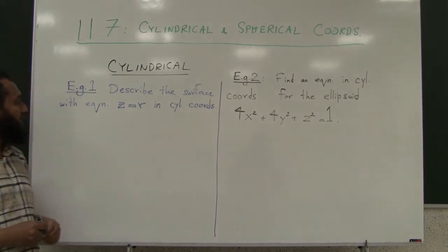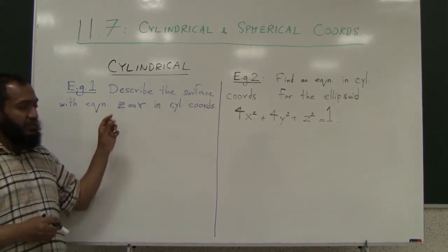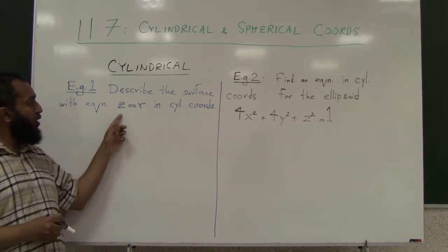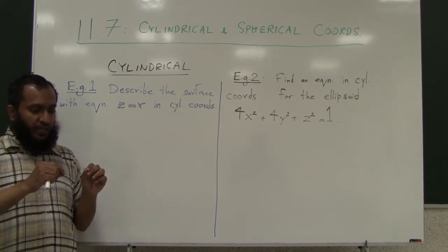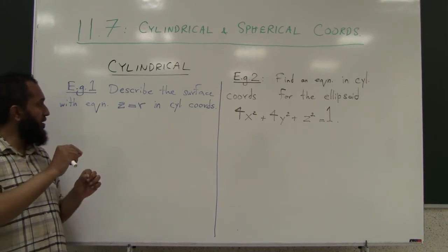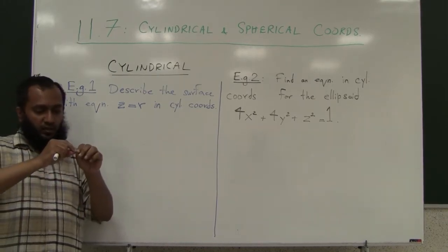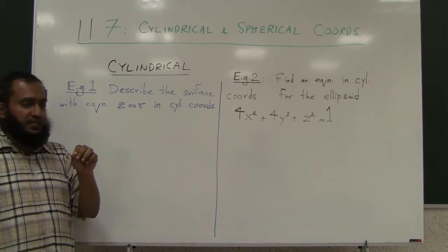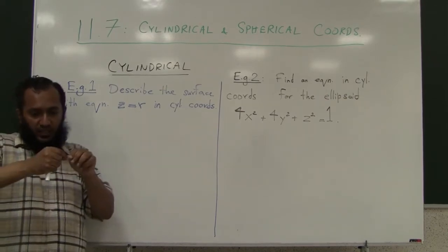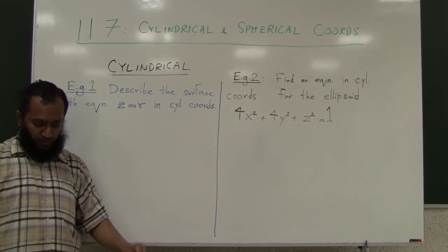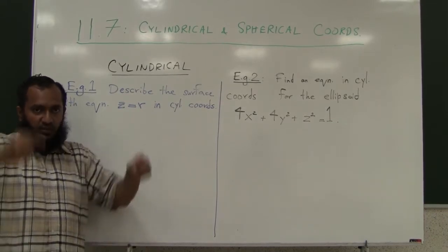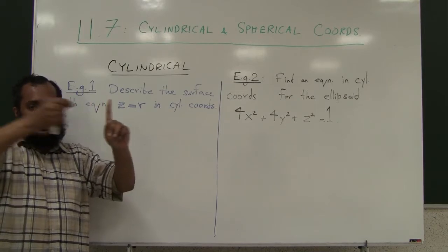What it is saying is that at any point, only those points on the surface where the height from the xy-plane equals your distance away from the z-axis. Remember, r is your distance of the point from the z-axis - you can drop the projection to xy and measure the distance from origin, or when you're up here you measure the distance from the z-axis.